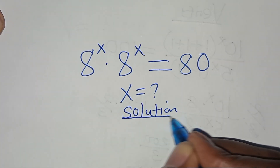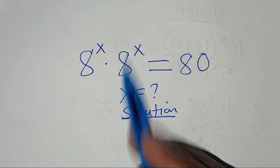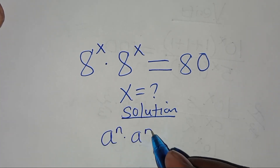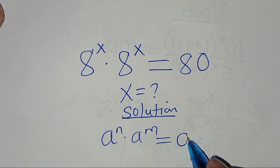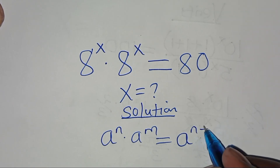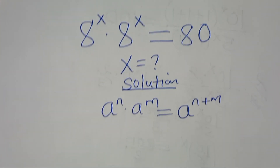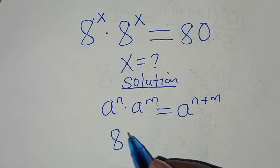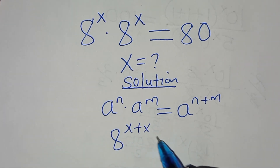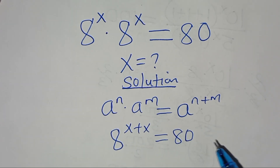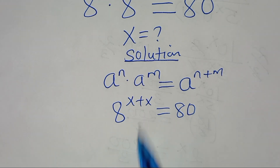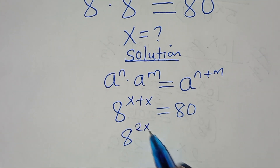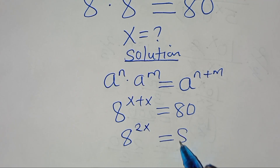The solution: this exponential equation is in the form of 8 to the power n times 8 to the power m, which we can express as 8 to the power n plus m. Applying this exponent property, we'll have 8 to the power x plus x, which is 8 to the power 2x. This is equal to 80.